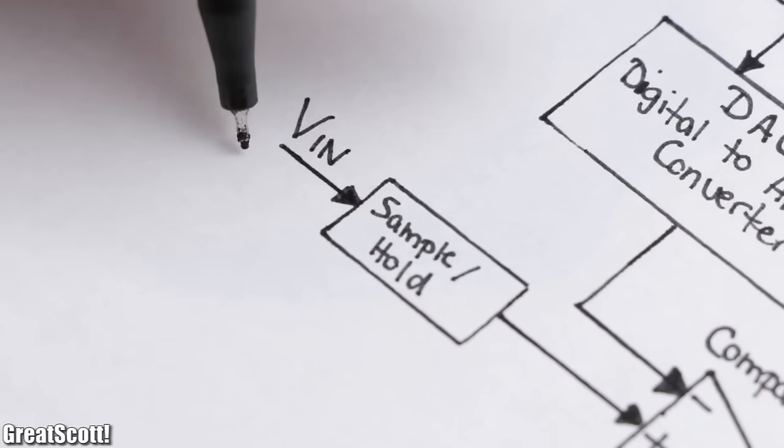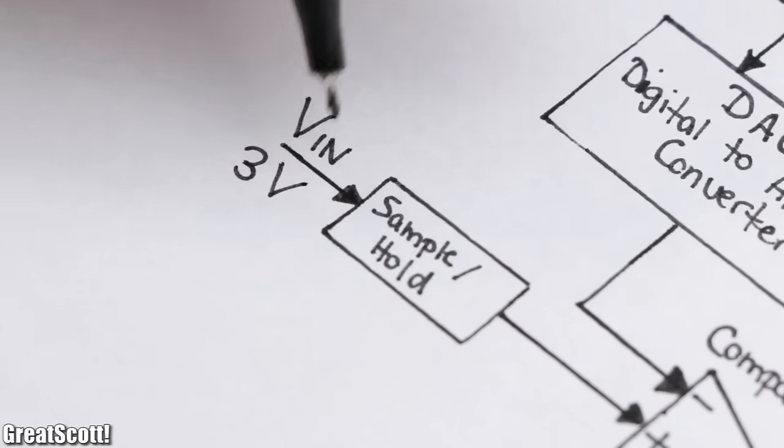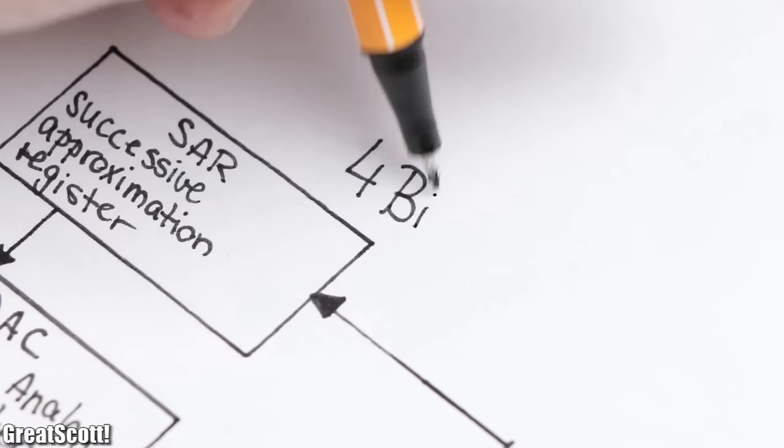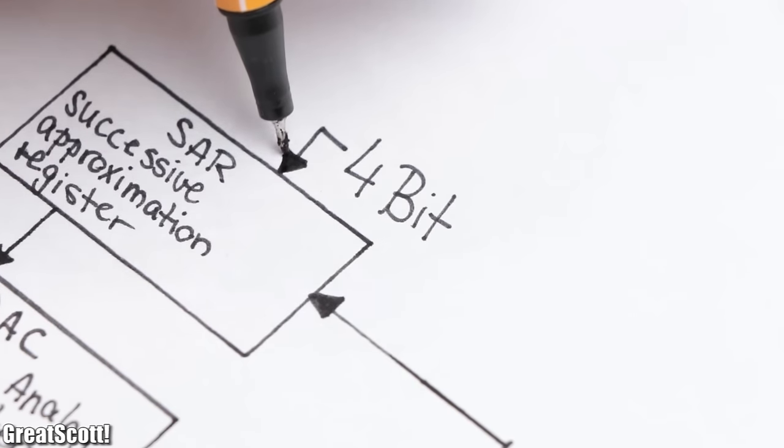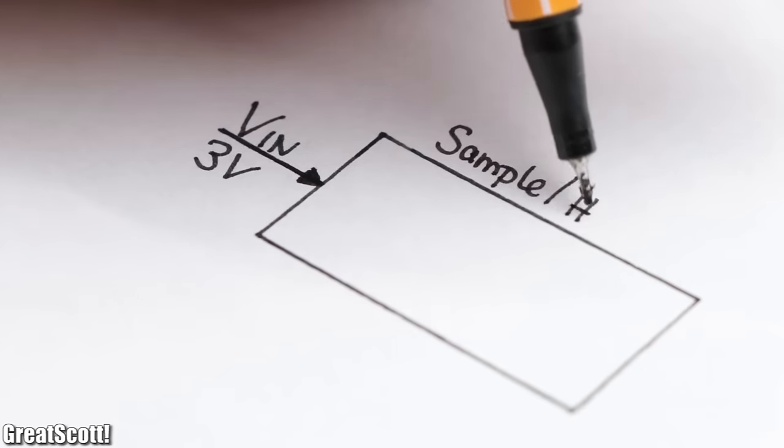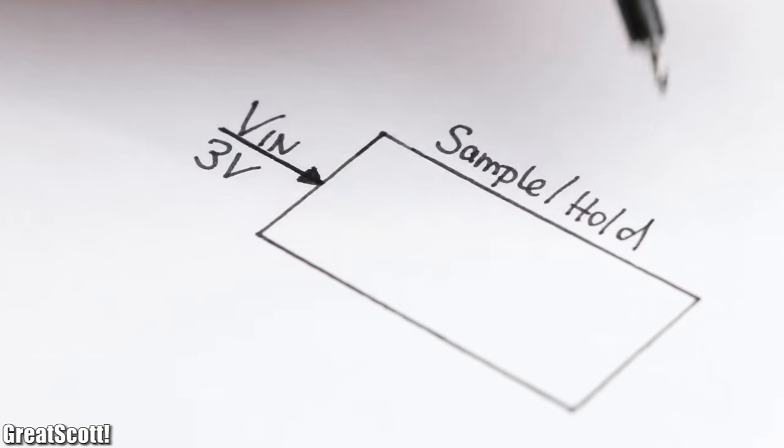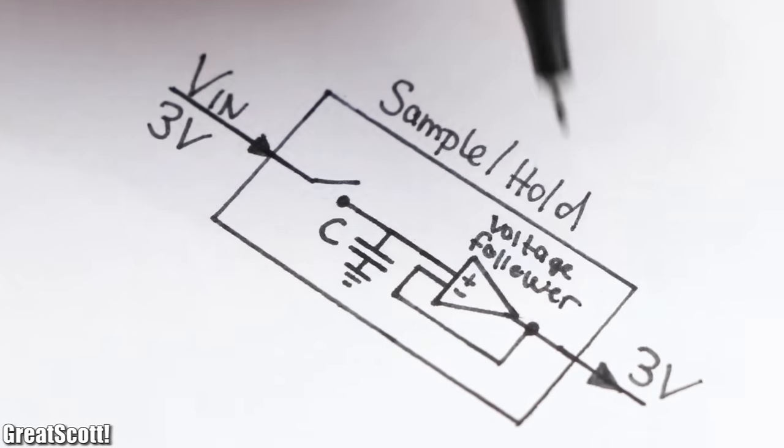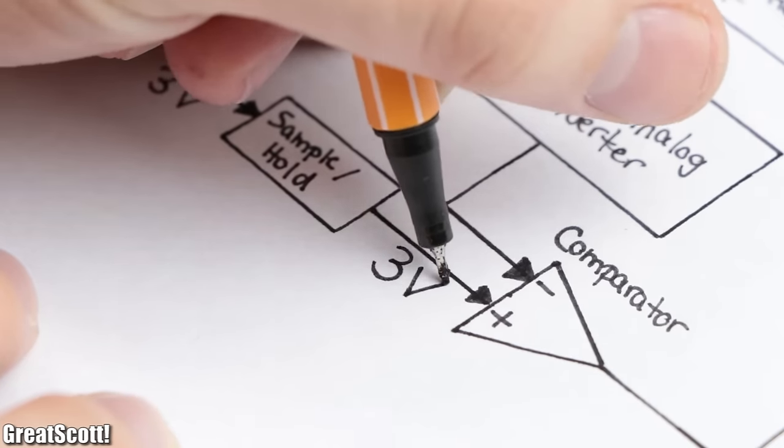As an example, let's use an input voltage of 3 volts, a reference voltage of 5 volts, and a rather low resolution of only 4 bits. First off, the 3 volts is sampled and held steady by a capacitor and a voltage follower, which then provides this voltage for the comparator.